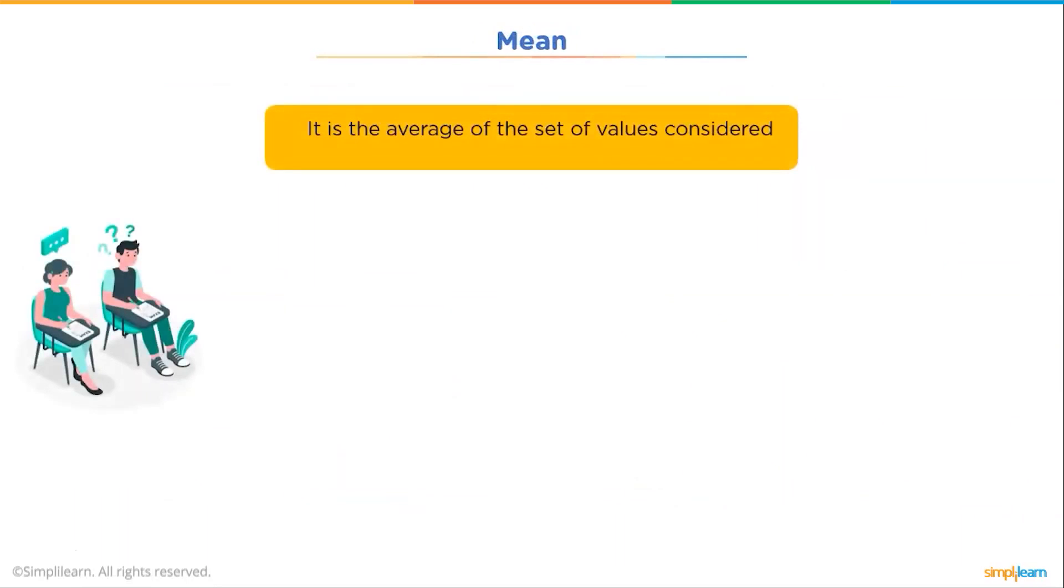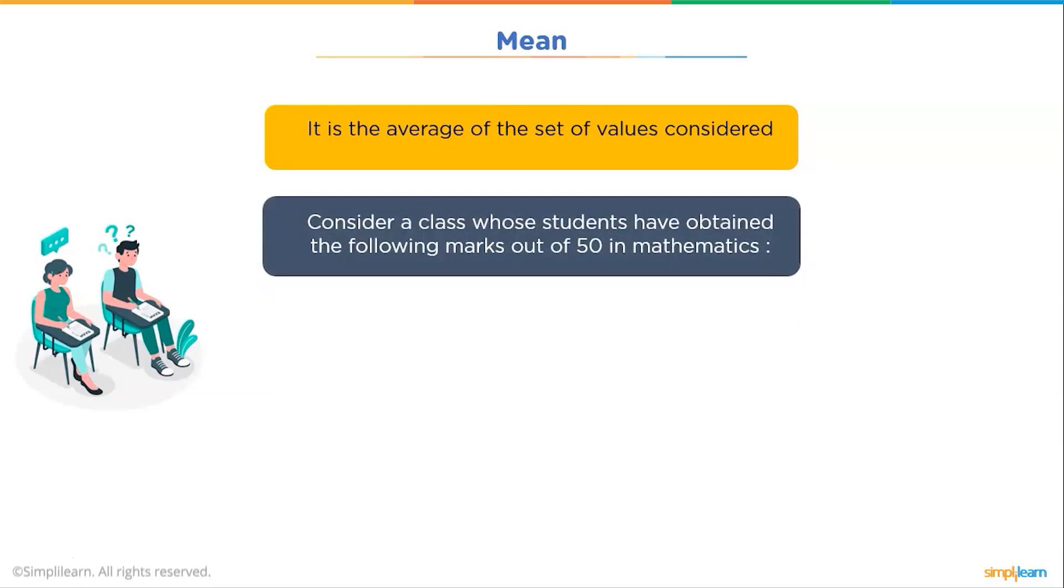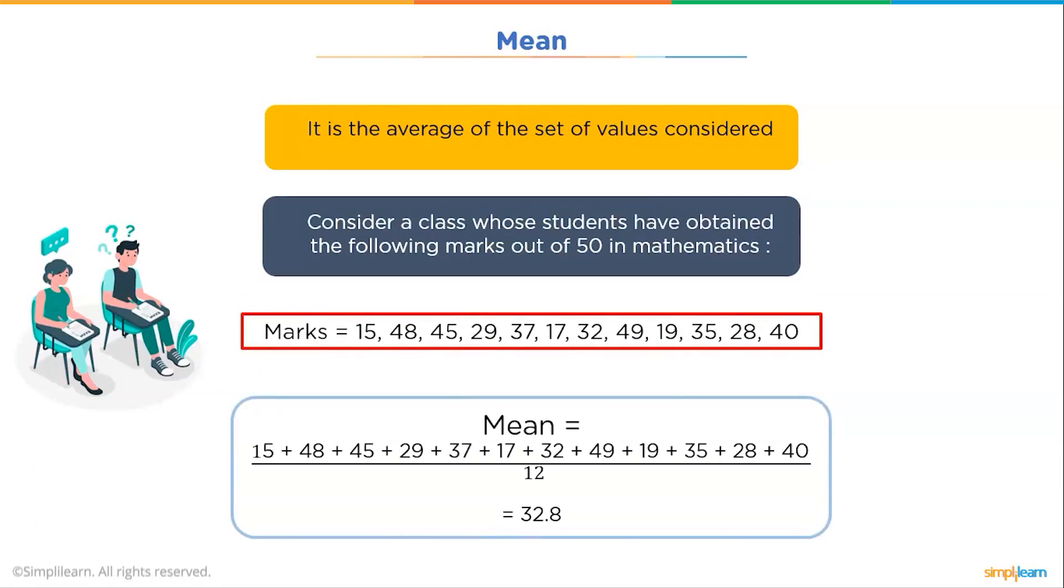Now let's discuss some of the important terms related to statistics. The first one is Mean. The mean or the average is the most popular and well-known measure of central tendency. It can be used with both discrete and continuous data, although its use is most often with continuous data. It is the average of all the set of values that are considered. To understand better, let's take an example. Suppose we have a class whose students have obtained the following marks out of 15 in mathematics. Here are the following marks. So to find the mean of these marks, we will add all the marks and divide it by the number of marks there are. So we have a total of 12 marks. So the mean of these numbers is 32.8.